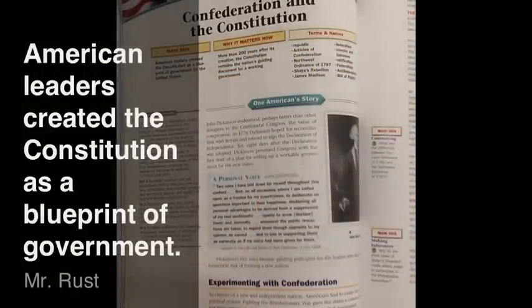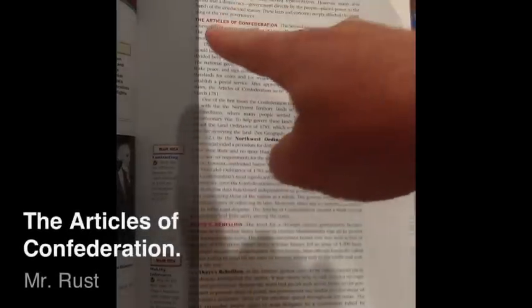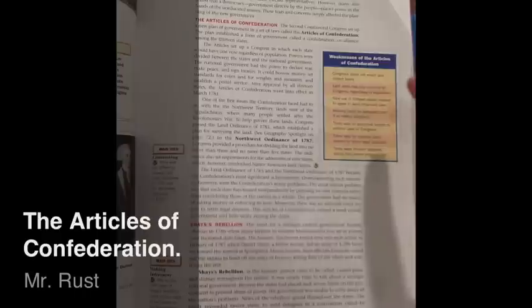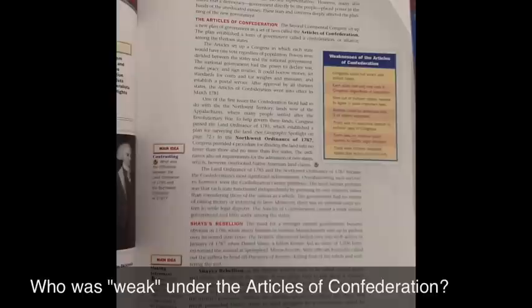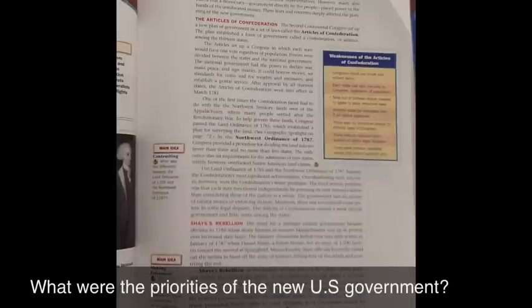Why does it matter? More than 200 years after its creation, the Constitution remains the nation's guiding document for a working government. The first government of the United States of America is detailed here — it's called the Articles of Confederation. The weaknesses of the Articles of Confederation are described in this box.